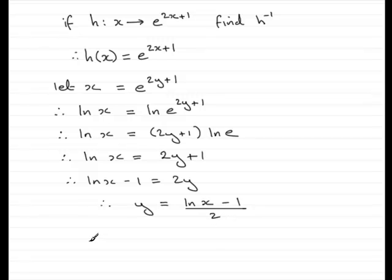So what we need to do now is to replace y with either h to the minus 1 of x, which equals the natural log of x minus 1 all divided by 2, or if we were to write it back in this particular style, we could say that therefore h to the minus 1 is such that x maps onto the natural log of x minus 1 all over 2.